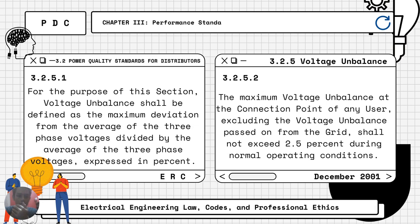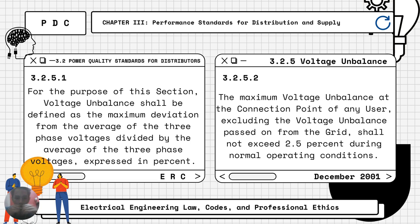Moving on to voltage imbalance, another part of power quality standards for distributors. Voltage imbalance shall be defined as the maximum deviation from the average of the three phase voltages divided by the average of the three phase voltages, expressed in percent. The maximum voltage imbalance at the connection point of any user, excluding the voltage imbalance passed on from the grid, shall not exceed 2.5% during normal operating conditions.